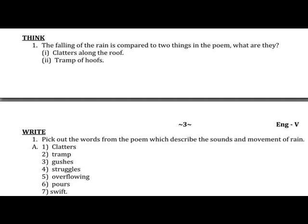The words from the poem that describe the sound and movement of rain are: clatters, tramp, gushes, struggles, overflowing, pores, swift. These are all the rain-related action words from the poem.